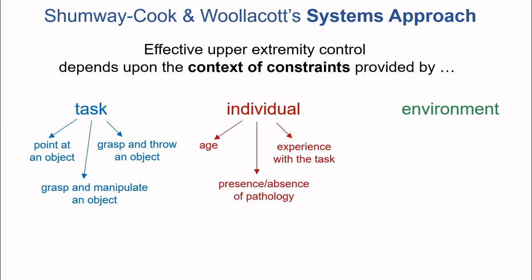In the case of subsystems within the individual, relevant factors include the age of the individual, the experience that a particular individual has in performing that type of upper extremity task, and the presence or absence of a particular pathology. Lastly, we have the constraints of the environment. For the task of manipulating an object, a fundamental environmental constraint is going to be the physical properties of the object to be manipulated.